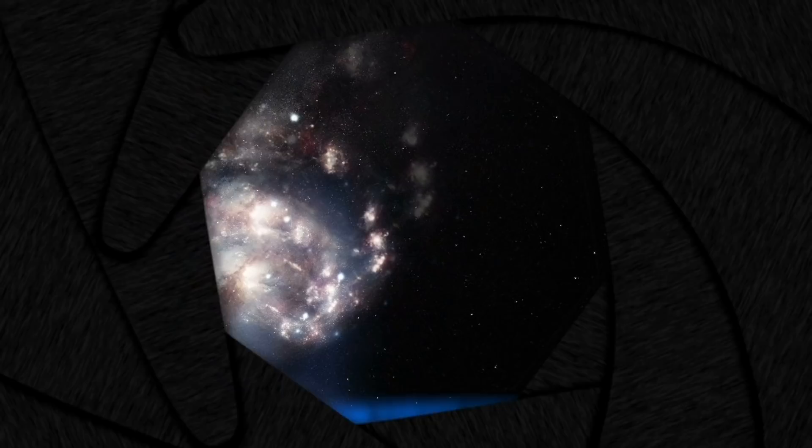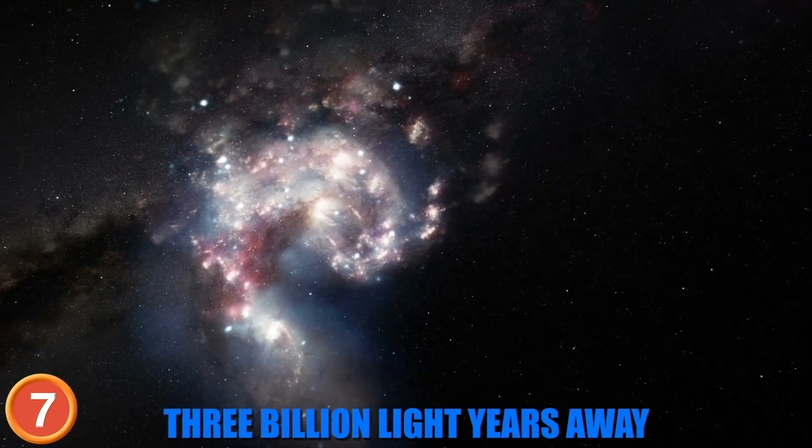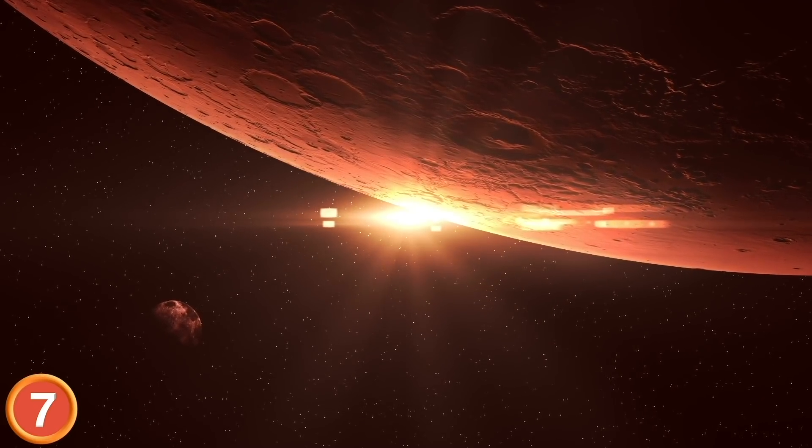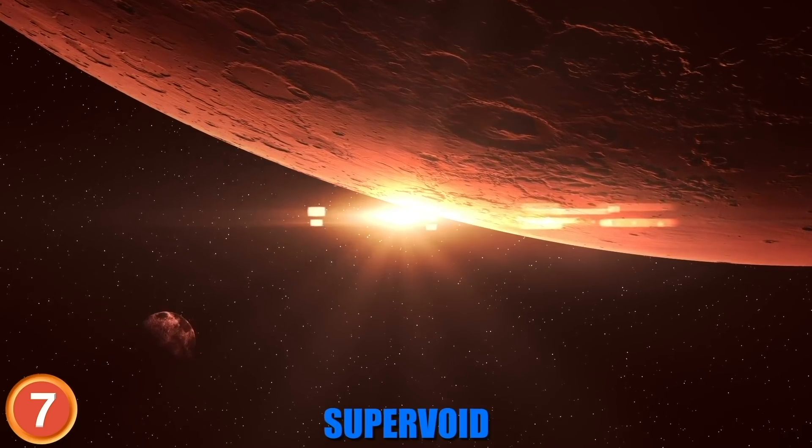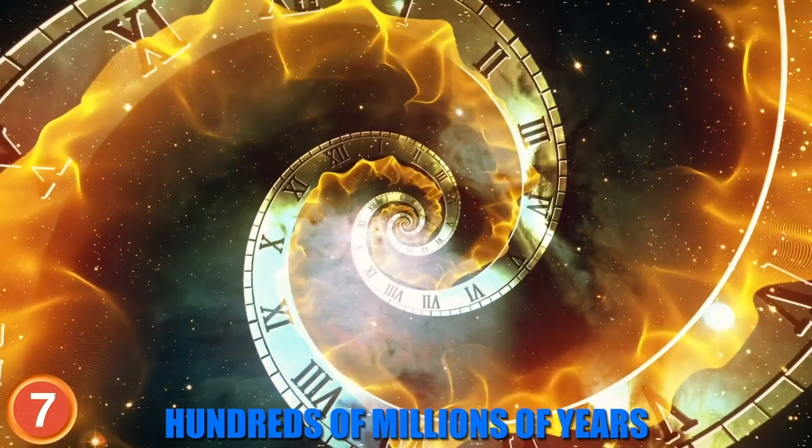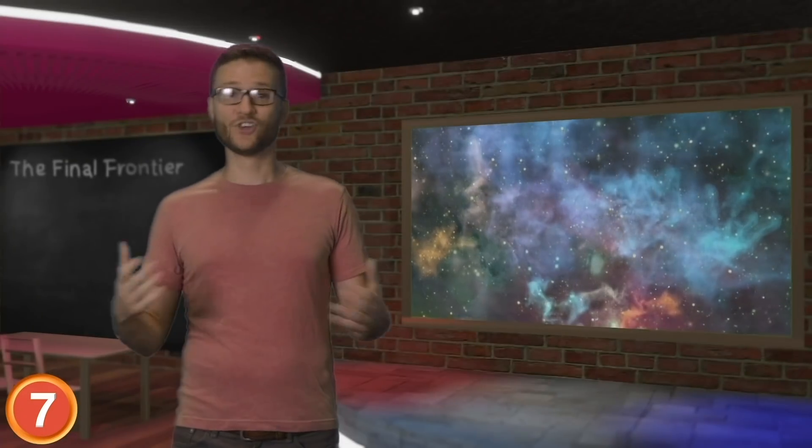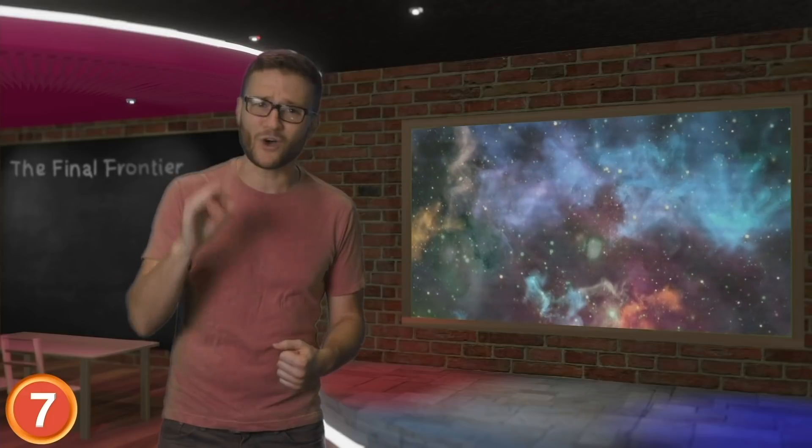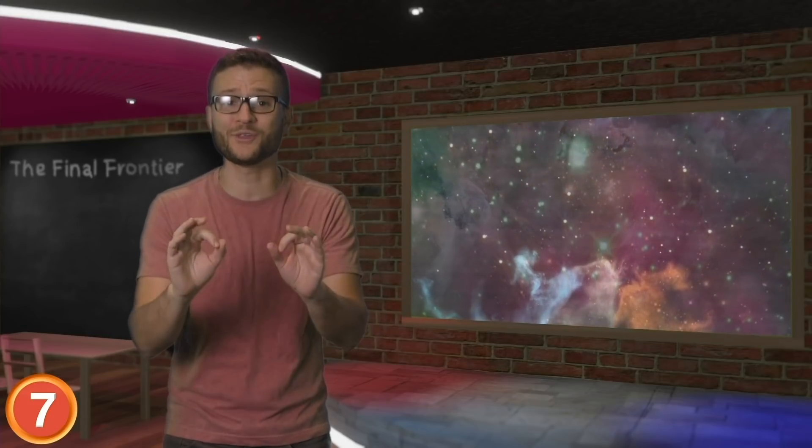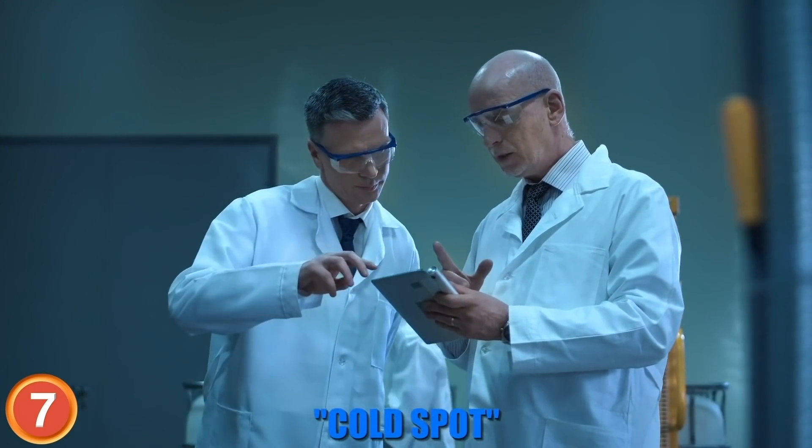Number 7. 3 billion light years from Earth is the largest object in space. It's known as a Super Void and it's so large that it takes objects traveling at the speed of light hundreds of millions of years just to travel through it. Hey Super Void, your mama is so big she curves time and space. Hey Super Void, your mama is so big that she uses Google Earth to take a selfie. Hey Super Void, your mama is so big it took Thanos two snaps to kill her.